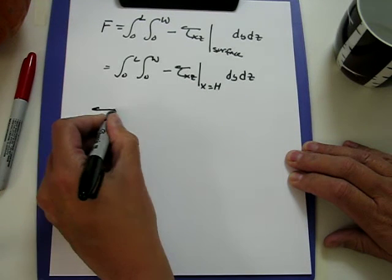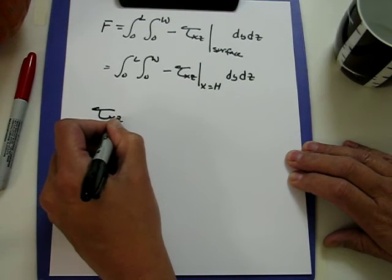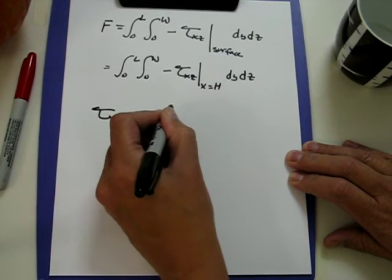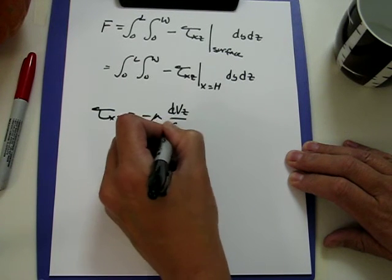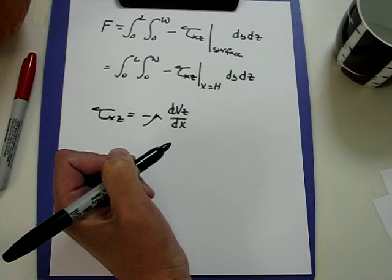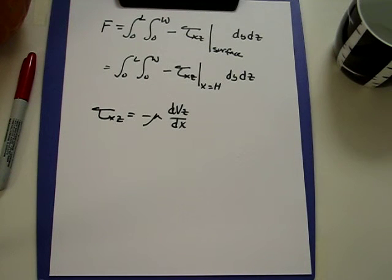Tau_xz comes from Newton's law of viscosity: minus mu dvz dx. We have the solution for velocity.